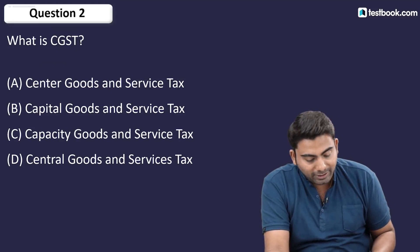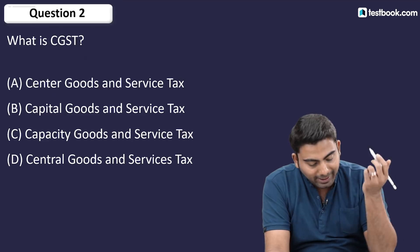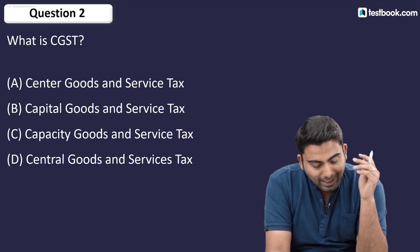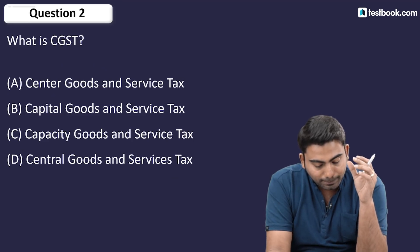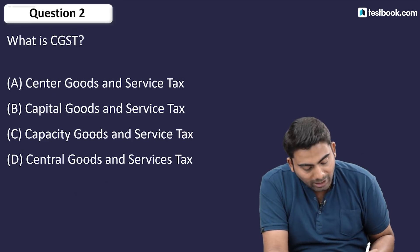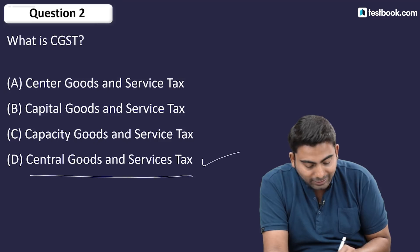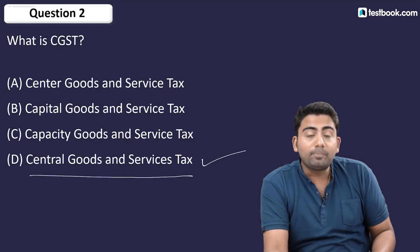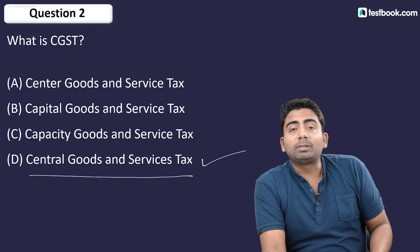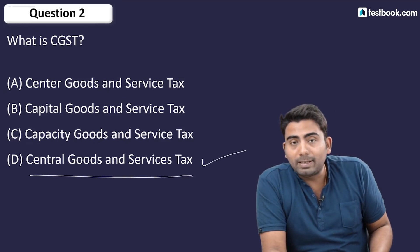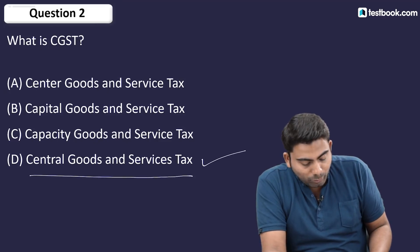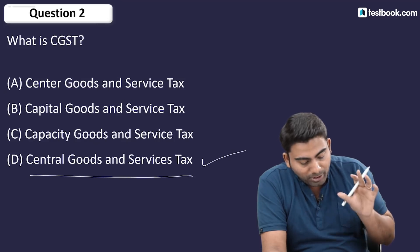Central Goods and Service Tax — option number 4. CGST means it is talking about the central government. Central Goods and Service Tax, option number 4.